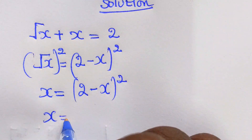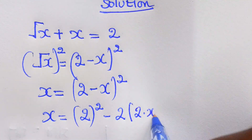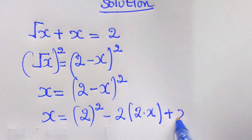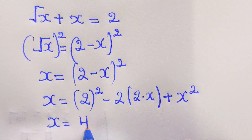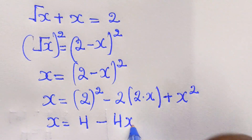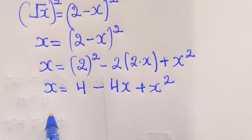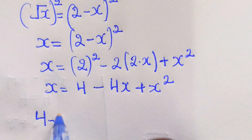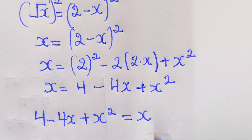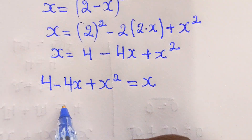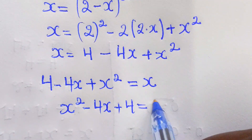And x equals to 2 squared minus 2 times 2 times x, then plus x squared. So x will be 4 minus 4x plus x squared. By interchanging, we shall say 4 minus 4x plus x squared equals to x. By rearranging, x squared minus 4x plus 4 equals to x.